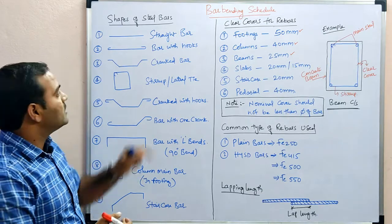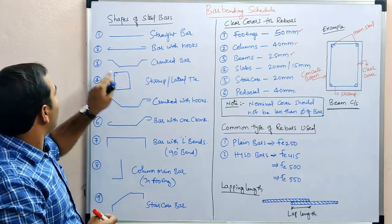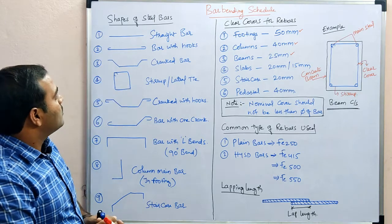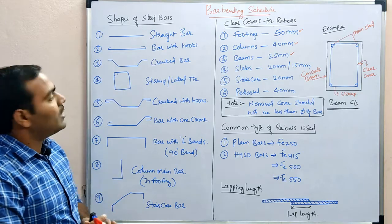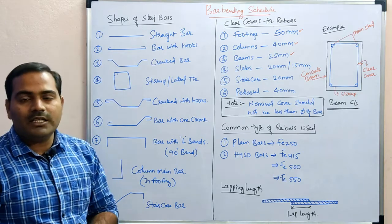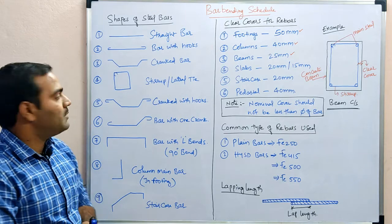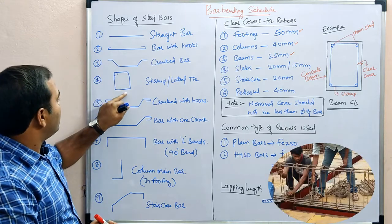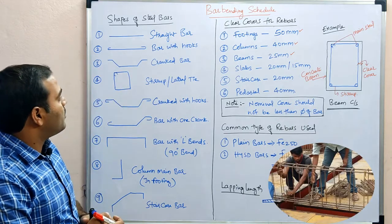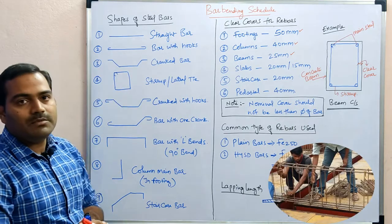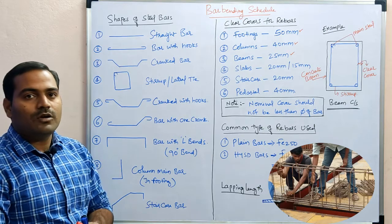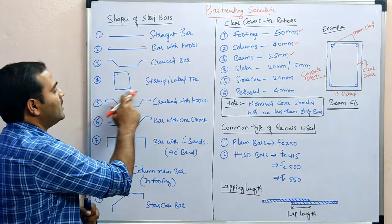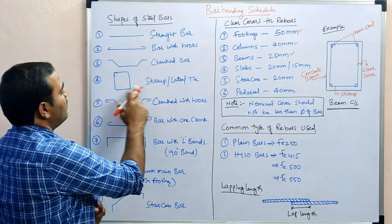Bars with hooks are generally seen in older construction, but nowadays we are providing straight bars. The third type is a cranked bar, which we can see in beams and also slabs. The next type is a ring — this kind of ring we provide in beams and also columns.